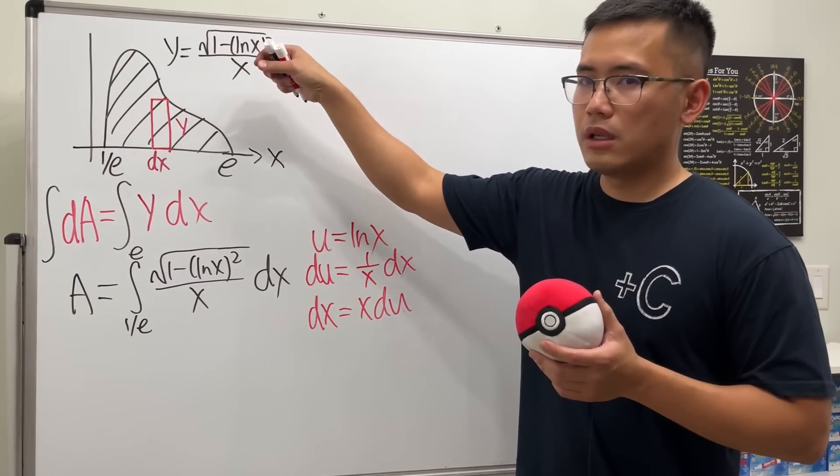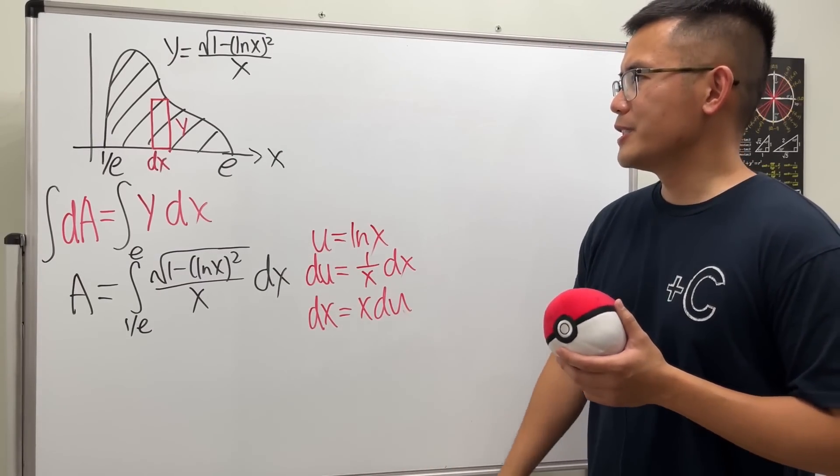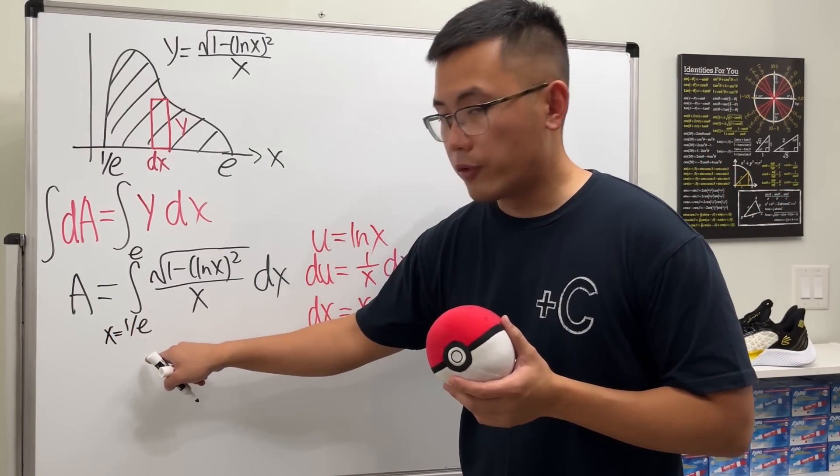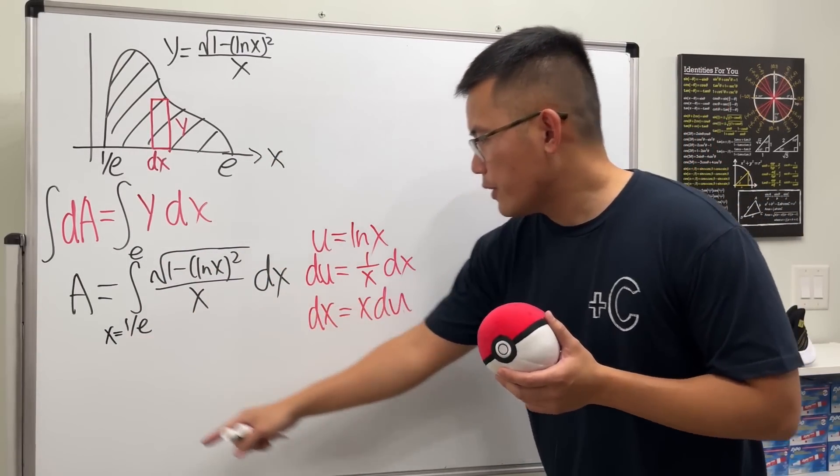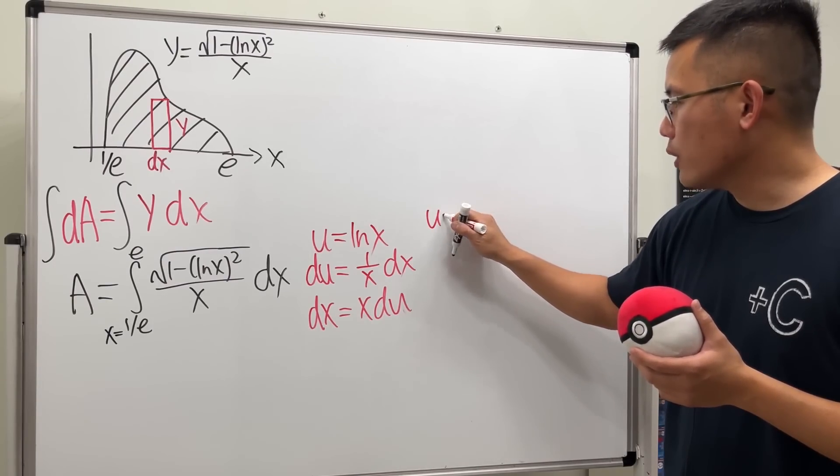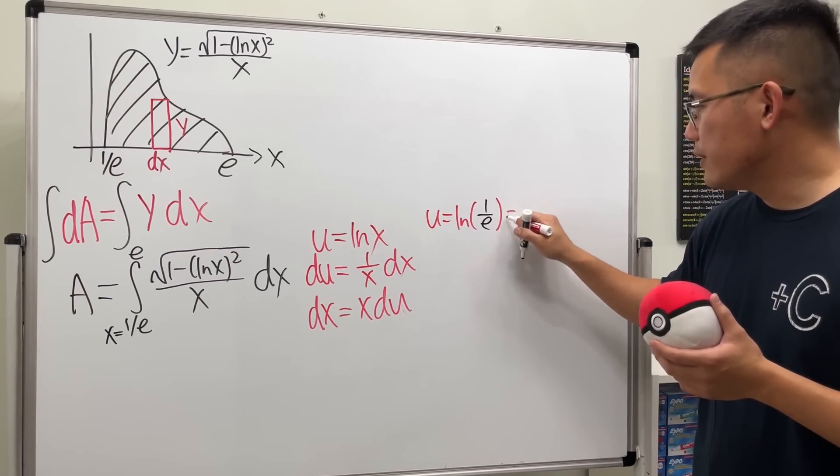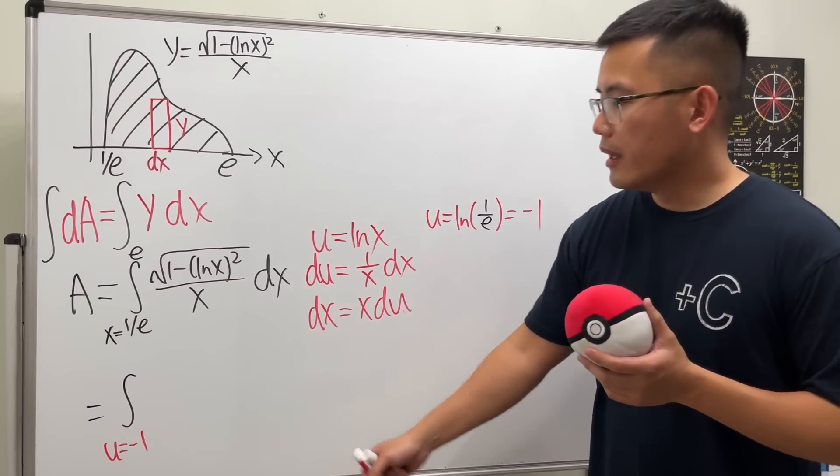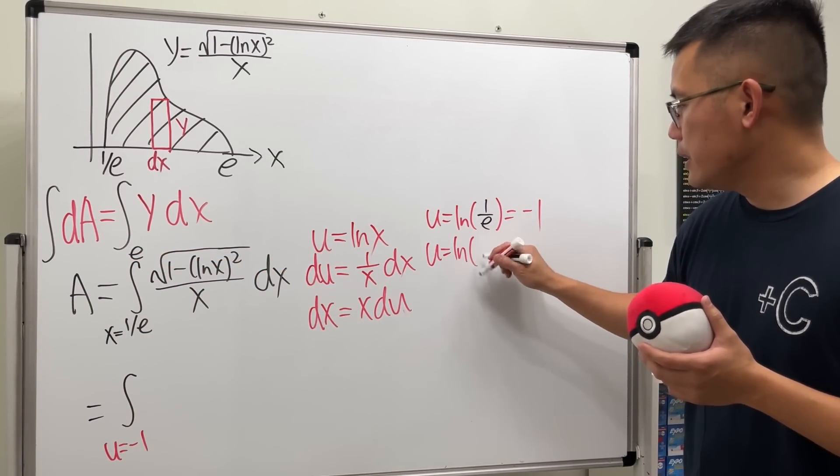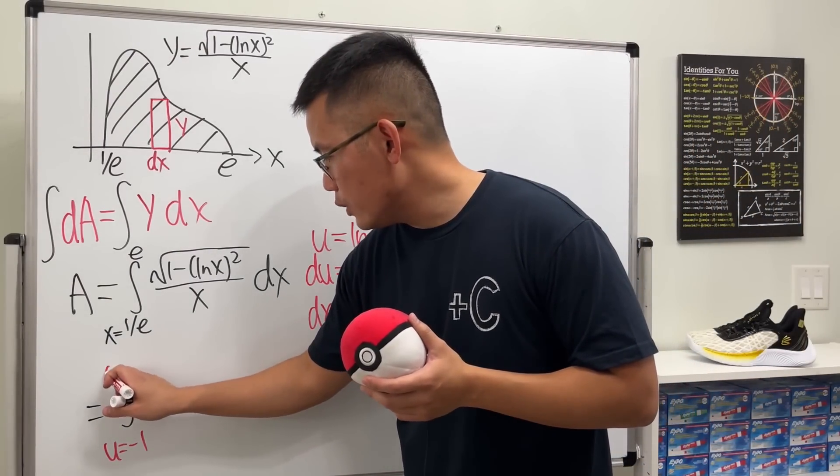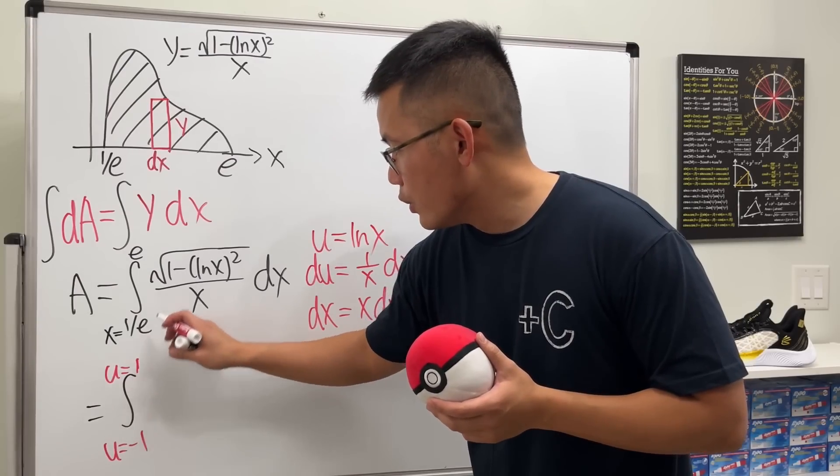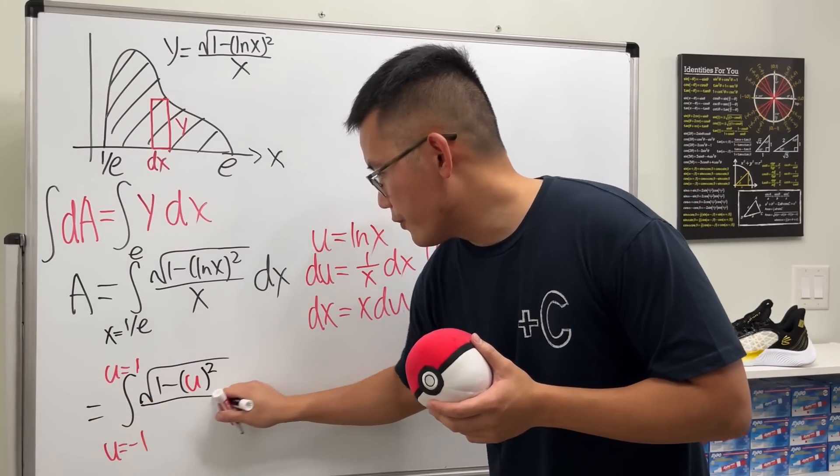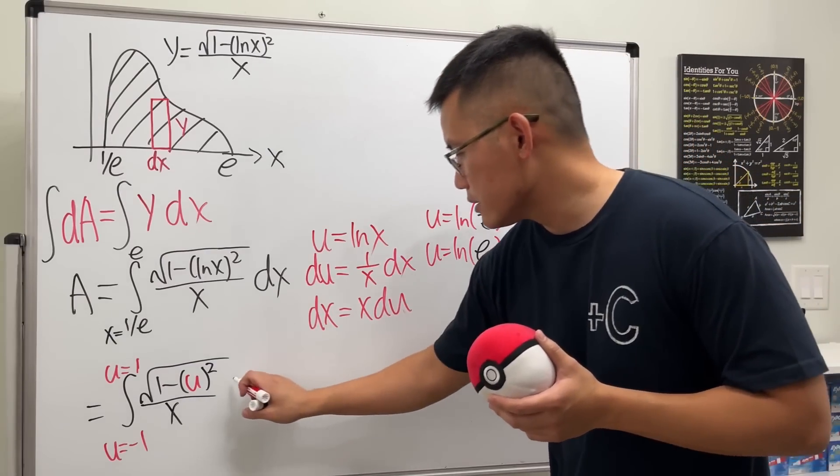Now we will take this integral to the u world. Originally the picture is based on the x-axis with this equation, and the region's shape is just not something that we are familiar with. Once we do this substitution, notice that x goes from 1/e, so we will also have to change that to u. Put 1/e in here—we are looking at u equals ln of 1/e, which gives us -1. So we get the integral in terms of u starting at -1. Then put e in here: u is going to be ln of e, which is 1. So u goes from -1 to 1.